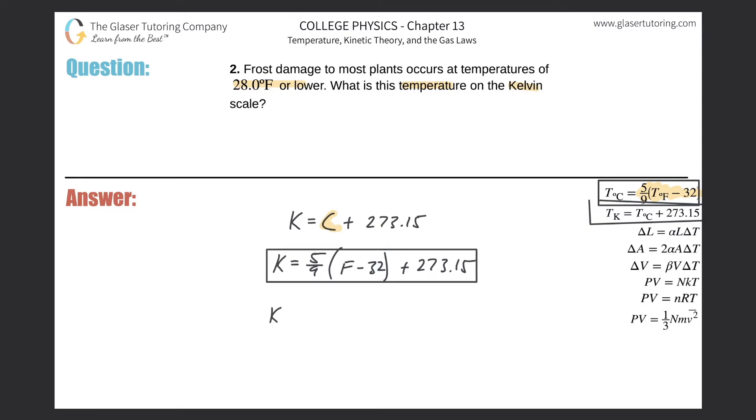Voila. Now all we have to do is just plug in 5 ninths multiplied by the 28.0 minus 32, plus then the 273.15. And now let's see what we're going to get.